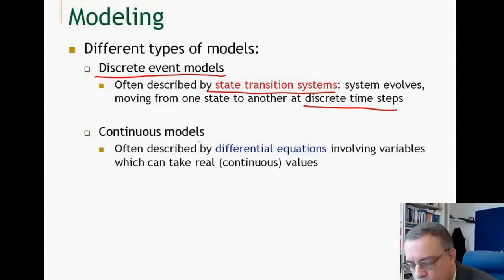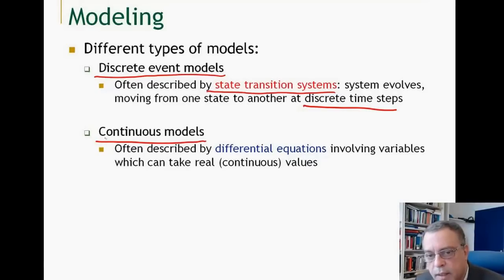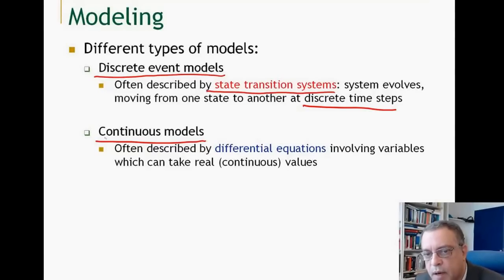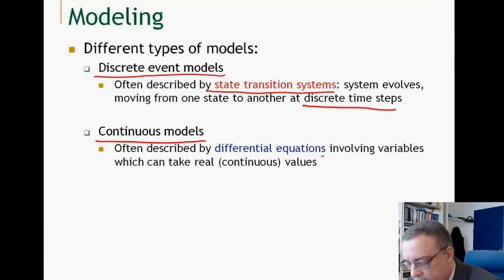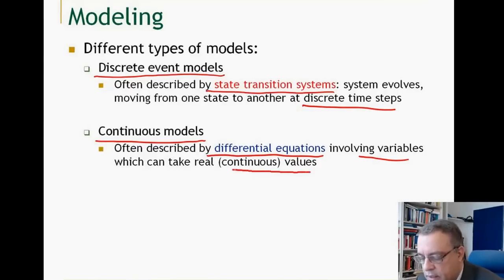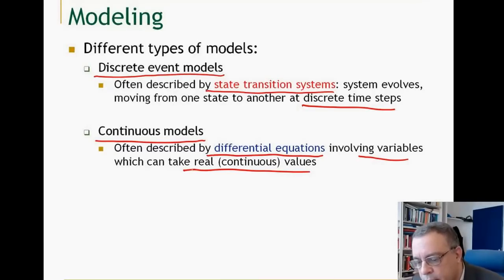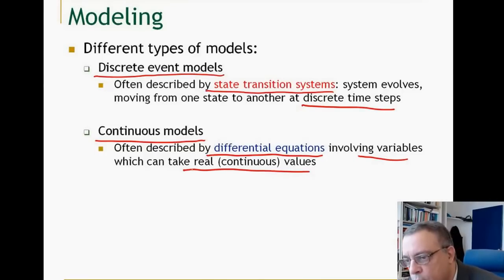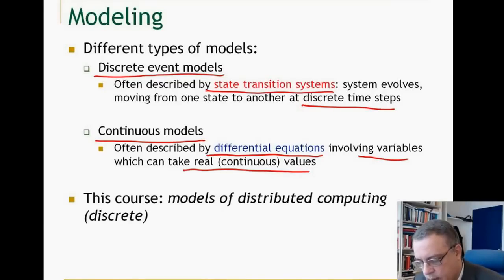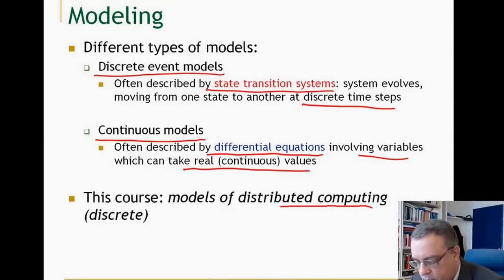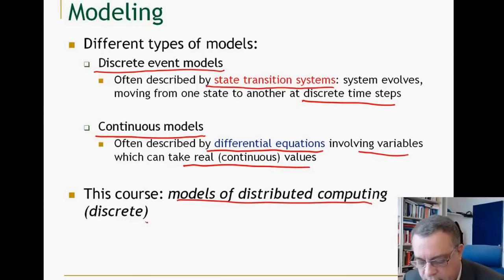Another type of model are continuous models. These are models that describe the system properties as a number of variables and these variables are function of time. It can be described by differential equations involving variables which can take real continuous values and these values change over time. The model is a function of evolution of the system on time. In this course, we are going to study models of distributed computing and the models we are interested in are discrete models.